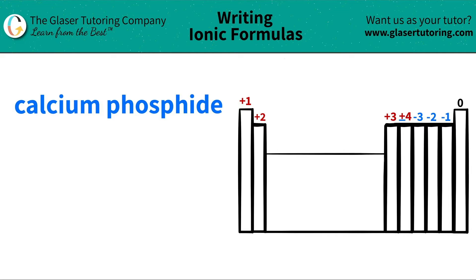Today we are going to be writing the formula for the ionic compound calcium phosphide. Let's see where these elements are located on the periodic table and then we'll take it from there.